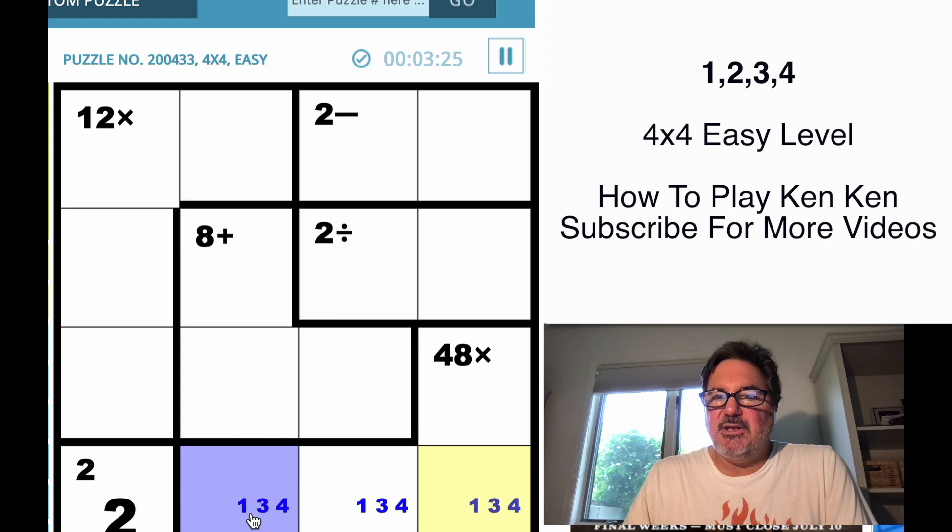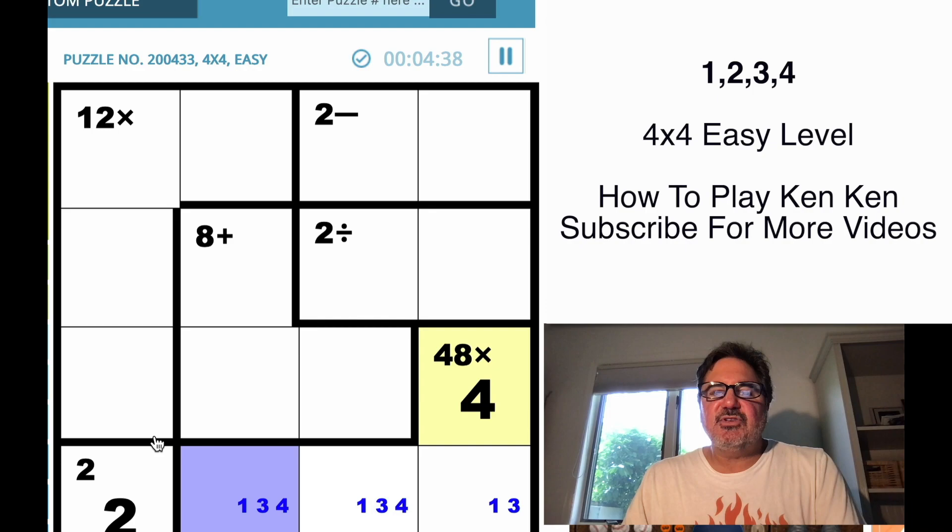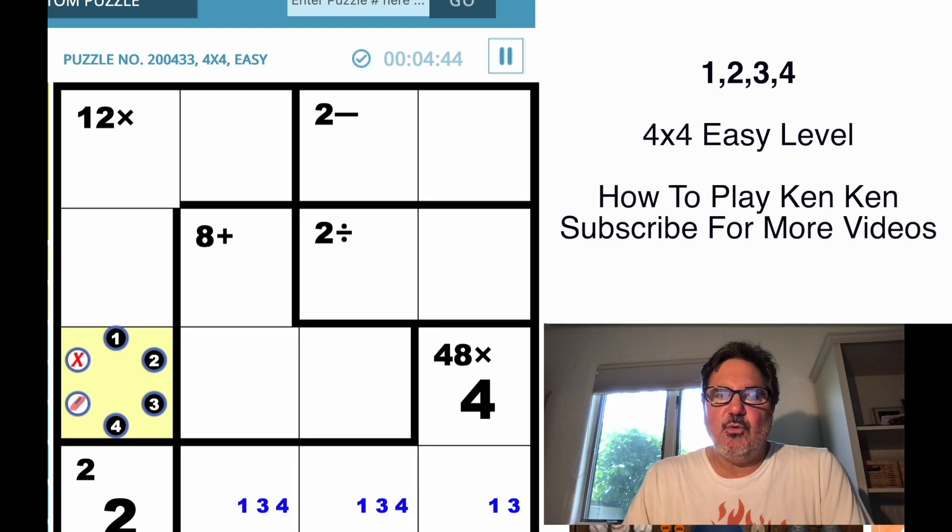And since we know that ultimately it's going to have to be multiplication, it doesn't mean that when we do know the order, one times three times four equals 12. So if we were to do the math and go, 48 is the number we need to get to, and 48 divided by 12 equals what? The answer is four. So we're going to know that this is a four. Let's do the same logic up here.